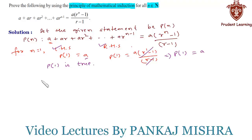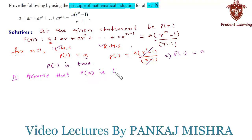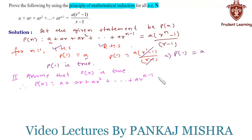In the second step, we assume that P(k) is true for some positive integer k. Therefore we have P(k): a plus ar plus ar squared and so on up to ar raised to k minus 1, equals a times r raised to k minus 1 upon r minus 1. Let us call this equation 1.